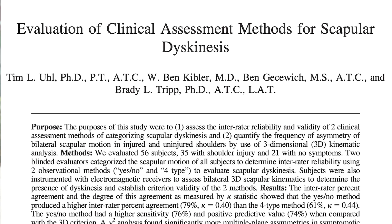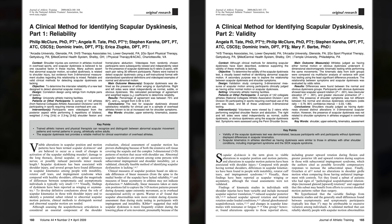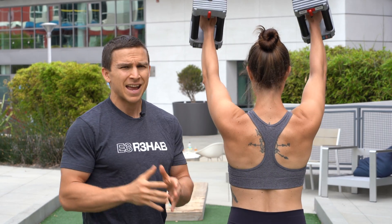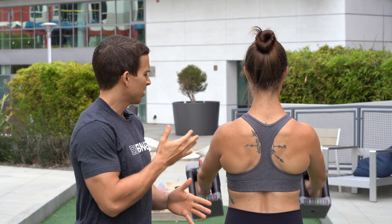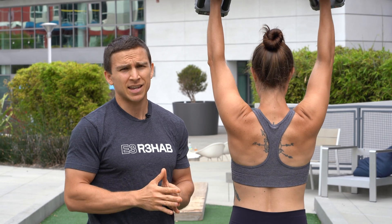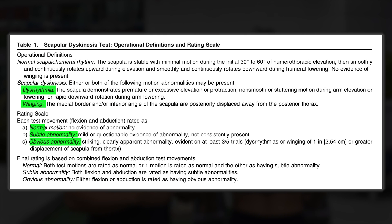Yule et al. in 2009 simplified this into a yes-no method — yes, you have one of those types (type 1 through 3), or no, you don't have any aberrant motion. Simultaneously, McClure et al. and Tate et al. in 2009 were creating their own scapular dyskinesis test in which they had participants raise their arms into shoulder flexion and abduction for five repetitions using a weight, going up to the count of three and coming down to the count of three. They were looking for what they called dysrhythmia or winging, and then would call it either subtle, obvious, or normal.